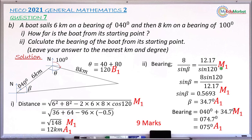For Roman two: a method mark for attempting to find angle beta, a method mark for substituting correctly into the sine rule, another method mark for simplifying to sine beta equals 0.56930, and an accuracy mark for taking the sine inverse to get 34.7 degrees. Finally, a method mark for adding 34.7 and 40 to find the bearing, and an accuracy mark for getting 075 degrees. Everything done correctly earns nine marks in total.